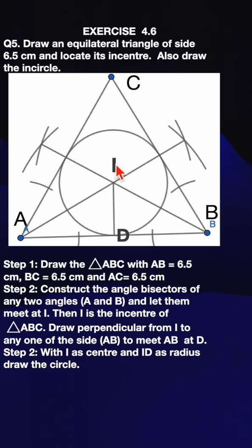The point of intersection is the incenter. With ID as the radius, you can draw the incircle.